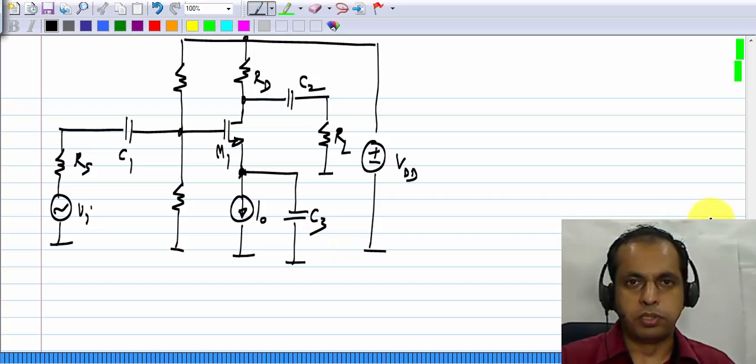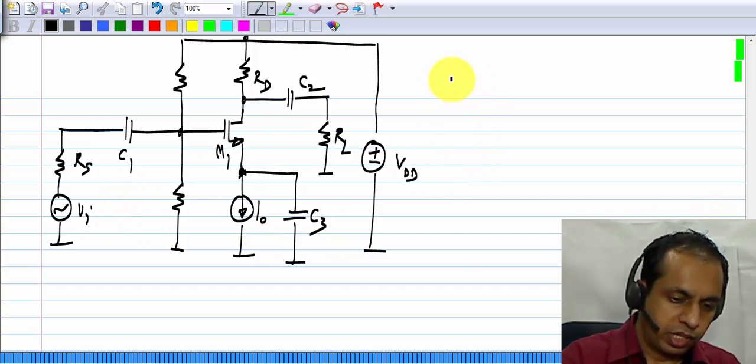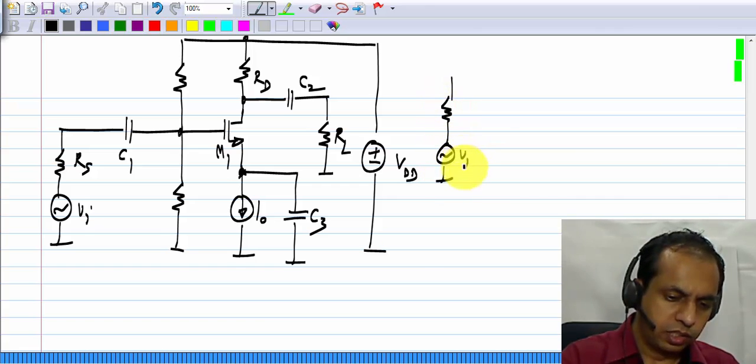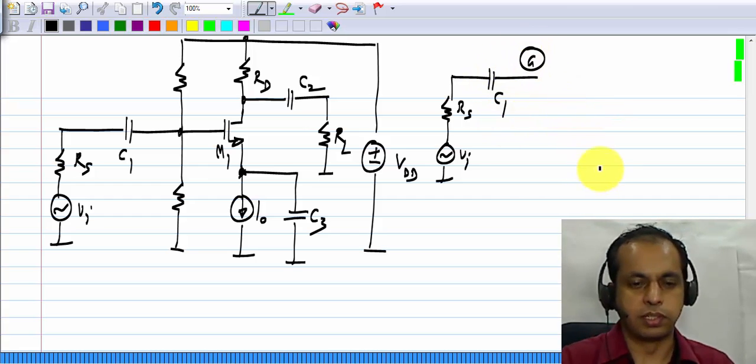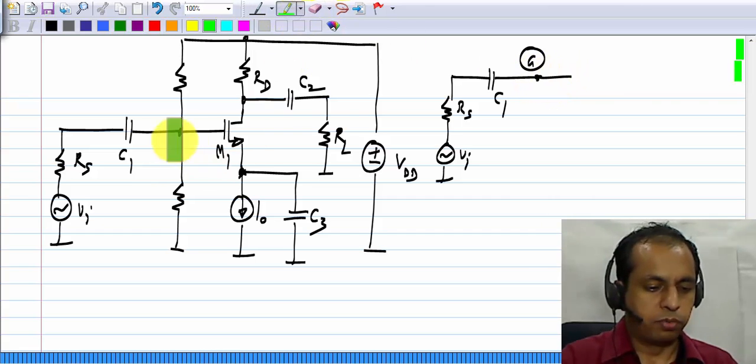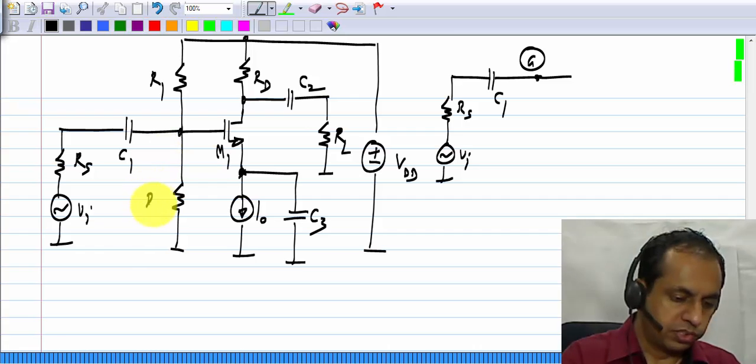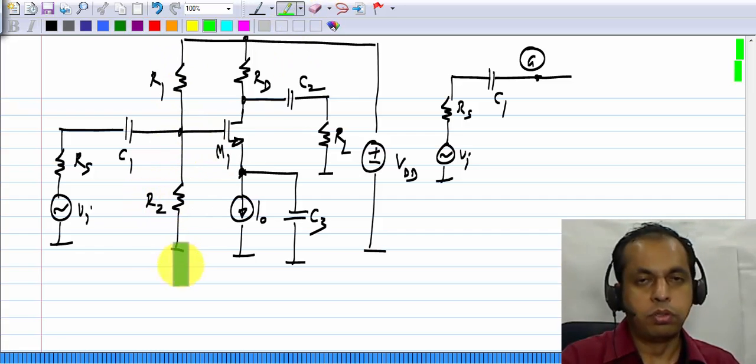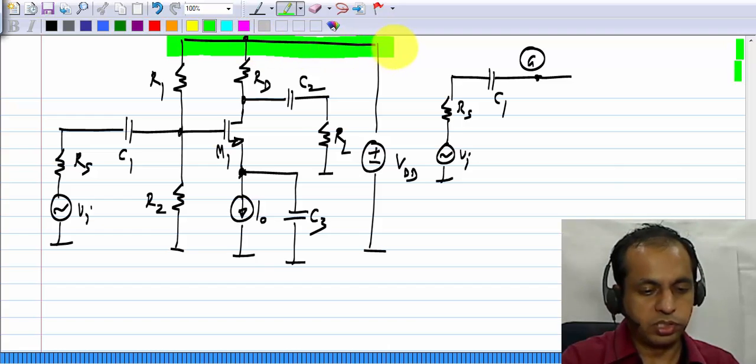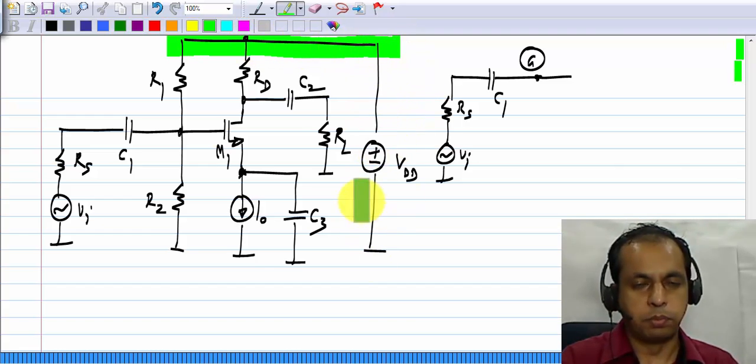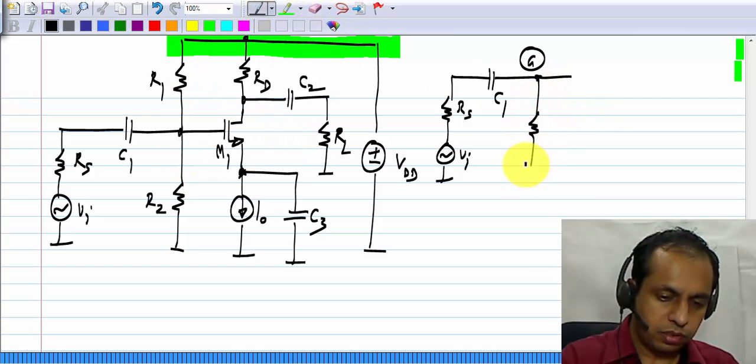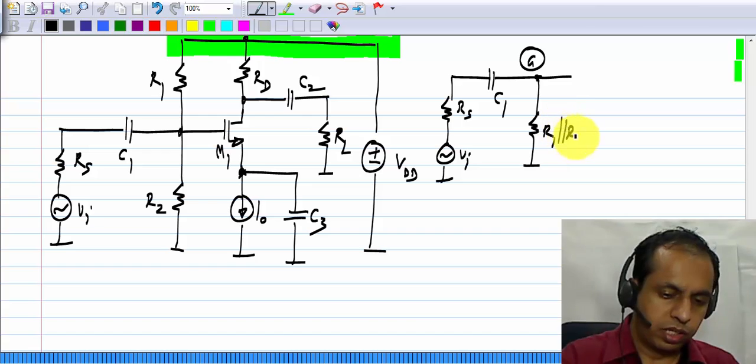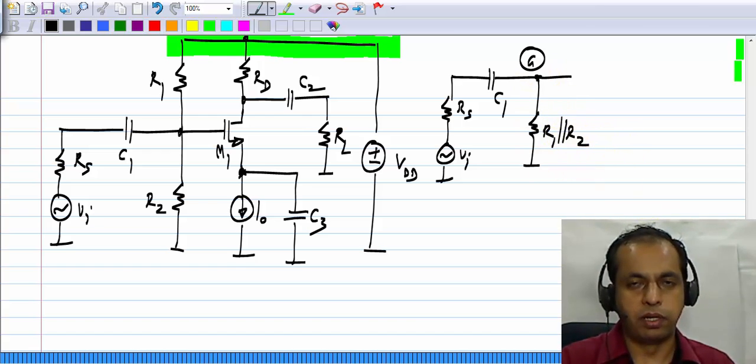Now, if I draw the small signal incremental picture of this, we will have the input source Vi RS and it is connected through capacitor C1 to the gate of the MOS transistor. And from the gate of the MOS transistor, we have these two resistors R1 and R2. And in the incremental picture, this point here, the supply voltage is also ground, because this supply voltage does not have any increments at all. So, we will have R1 and R2 from this point to ground. In other words, R1 parallel R2.